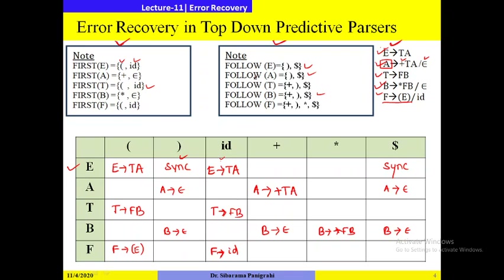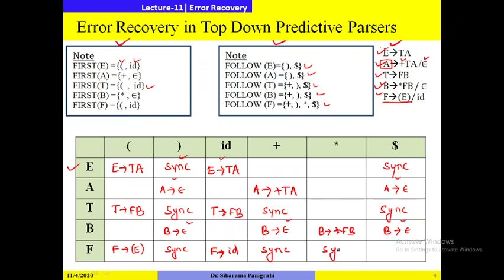To know whether to skip or not, we place synchronizing symbols in the table using the FOLLOW sets of every symbol. FOLLOW(E) is close bracket and dollar, so those positions get 'synch'. FOLLOW(A) is close bracket and dollar — productions already exist so no synch needed. FOLLOW(T) is plus, close bracket, dollar — write synch under plus and close bracket. FOLLOW(F) is plus, close bracket, star, dollar — write synch for those entries.